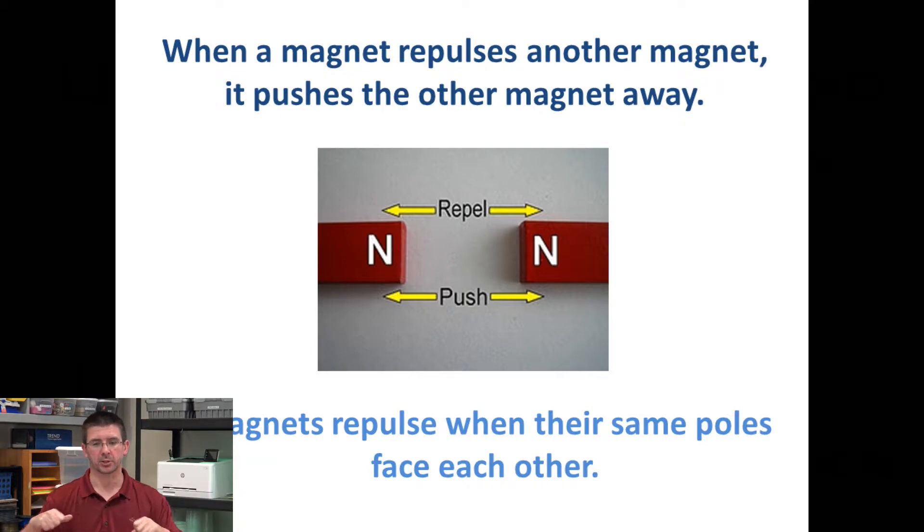they won't stick together. They'll actually push the other magnet away. Same thing if we do the south and south poles. They'll push each other away, and they will not stick together because they're repelling one another.